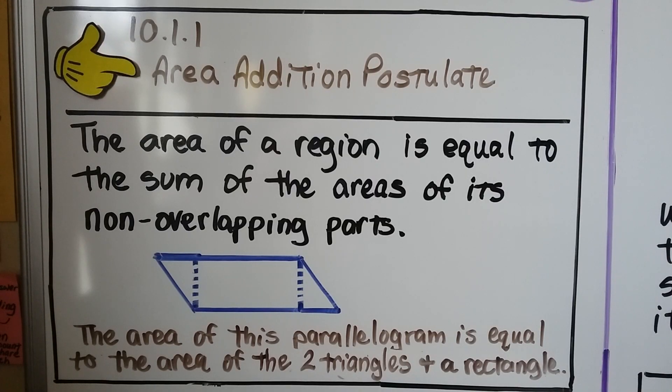Here's something for your notes. The area addition postulate says the area of a region is equal to the sum of the areas of its non-overlapping parts. So the area of this blue parallelogram is equal to the area of the two triangles and a rectangle.